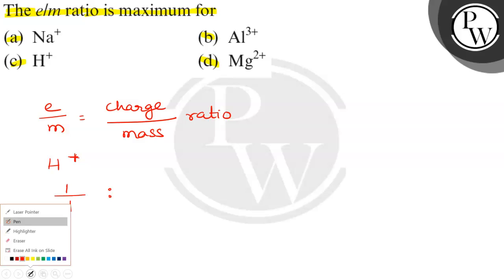Next. Aura next elements kui karenge. Aura next hai. Aluminium. Aluminium Al plus 3. Three positive charges. And aluminum atomic mass is 27.